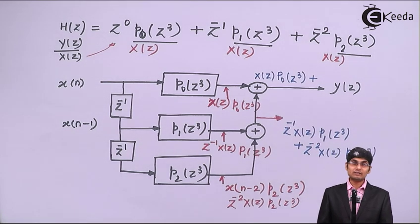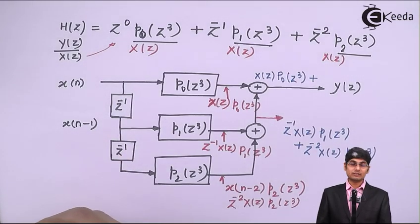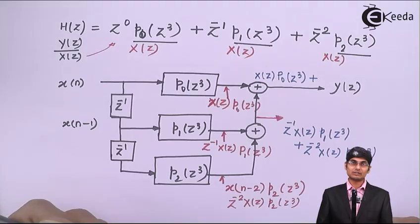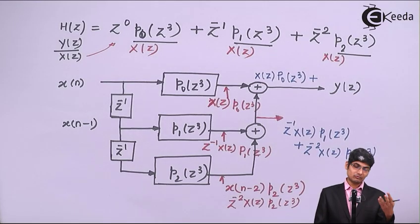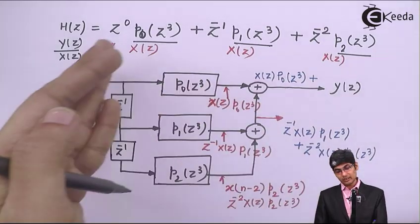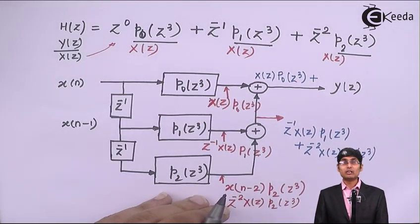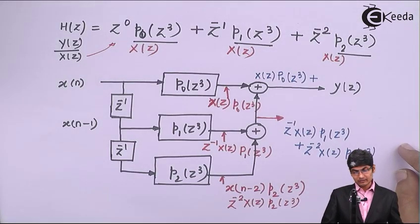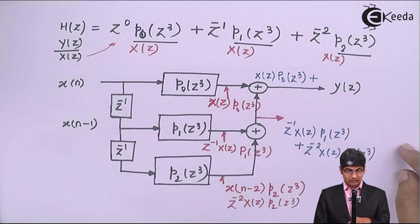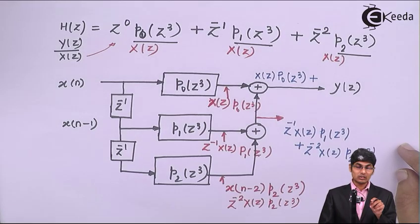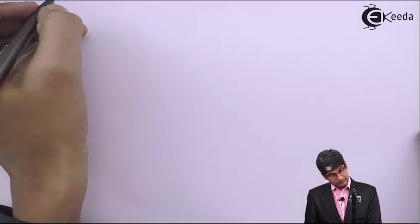These are called the M components of the polyphase structure. With M=3 we have 3 subsections; with M=5 we would have 5 subsections and 5 delay blocks. This is the way we make a polyphase filter structure. We can also interchange the positions of the delay blocks to obtain a new type called the transpose structure.